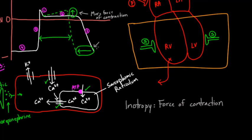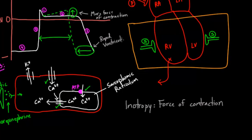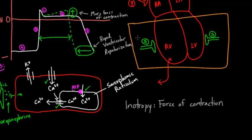The second major sympathetic effect shows that the ventricles can repolarize more quickly — rapid ventricular repolarization — meaning the ventricles are reset and ready to fire again more rapidly. So those are the two major sympathetic nerve effects on the ventricular muscle cells.